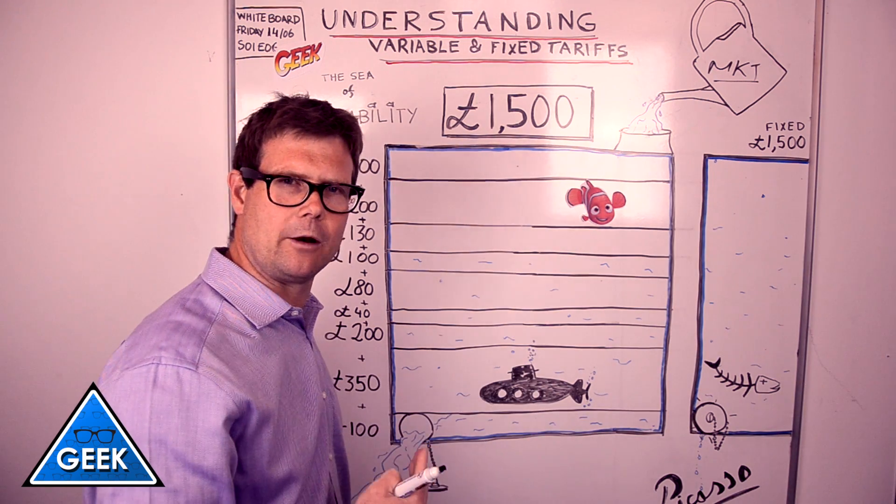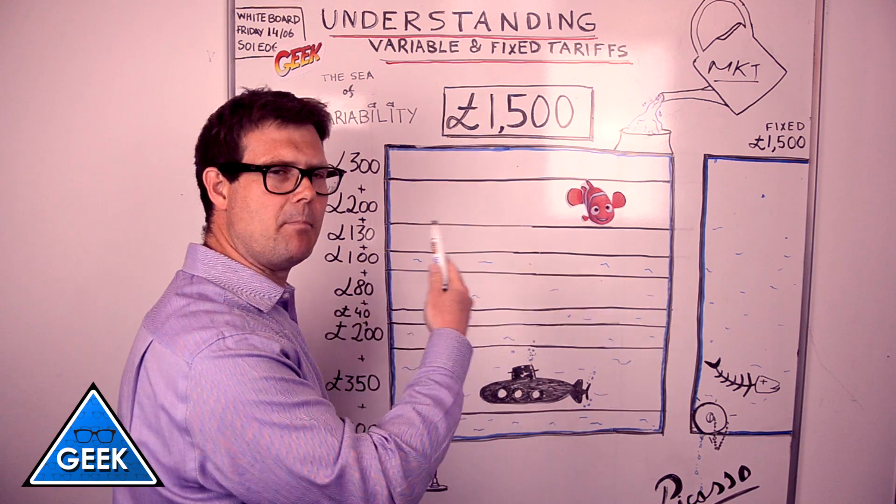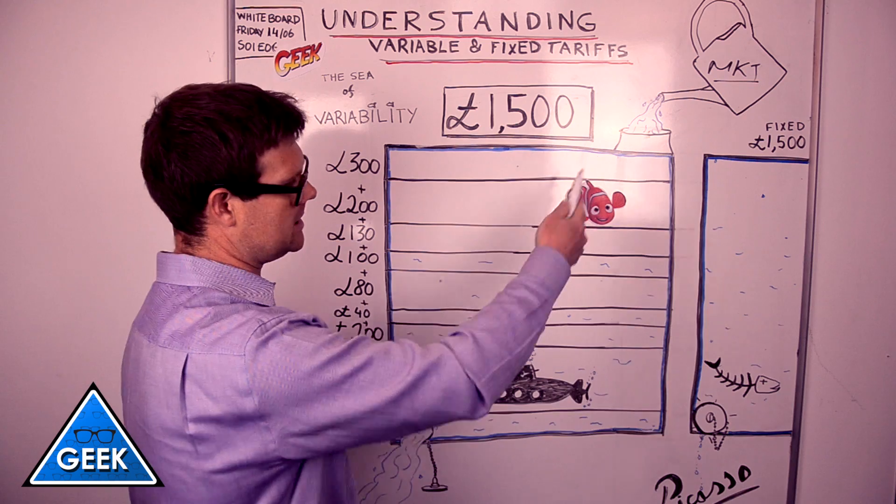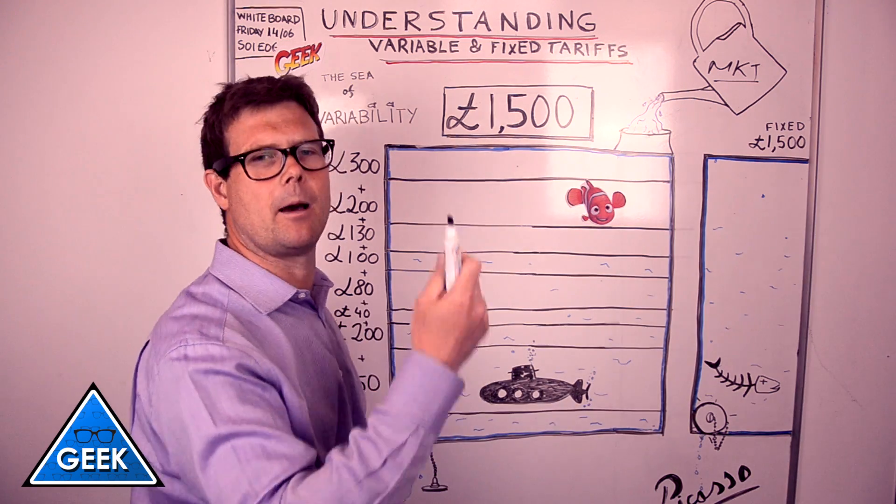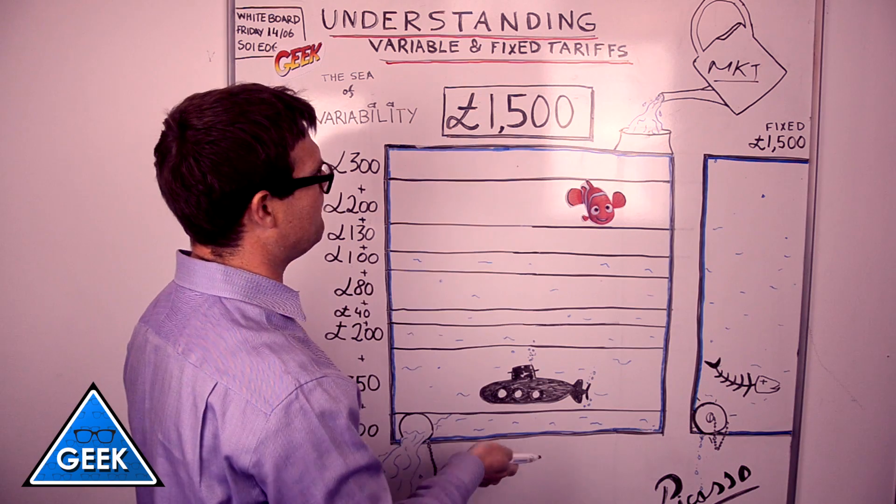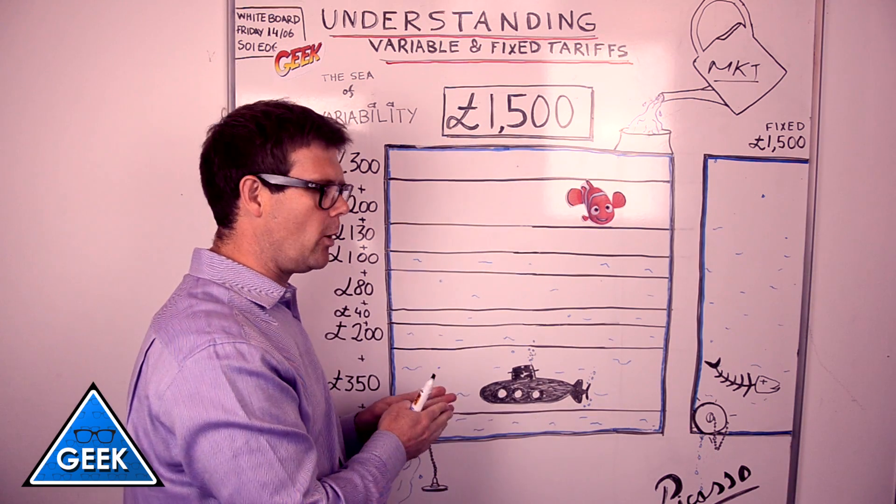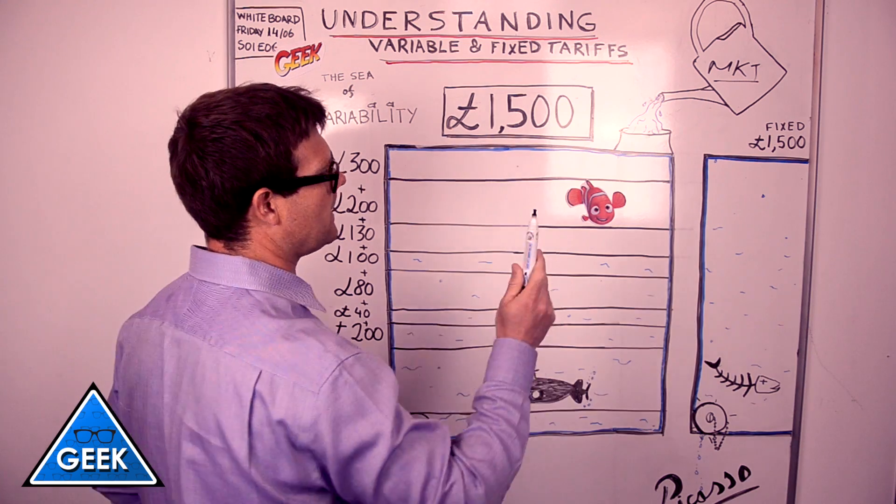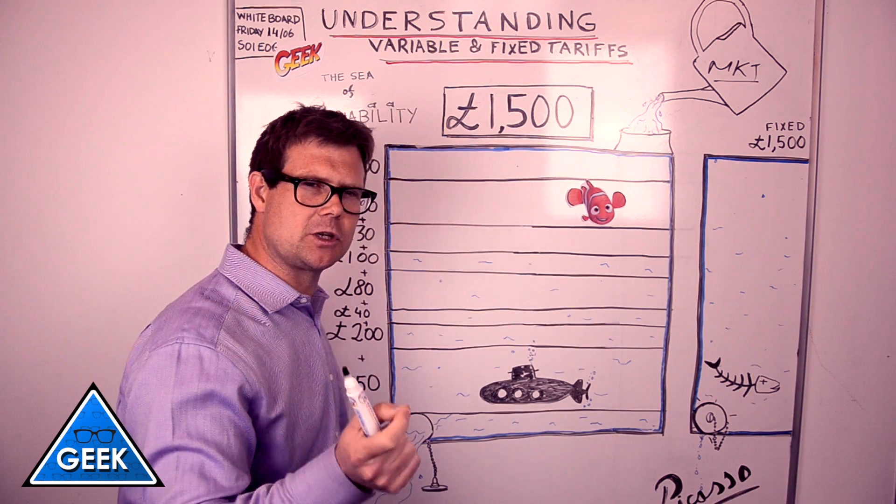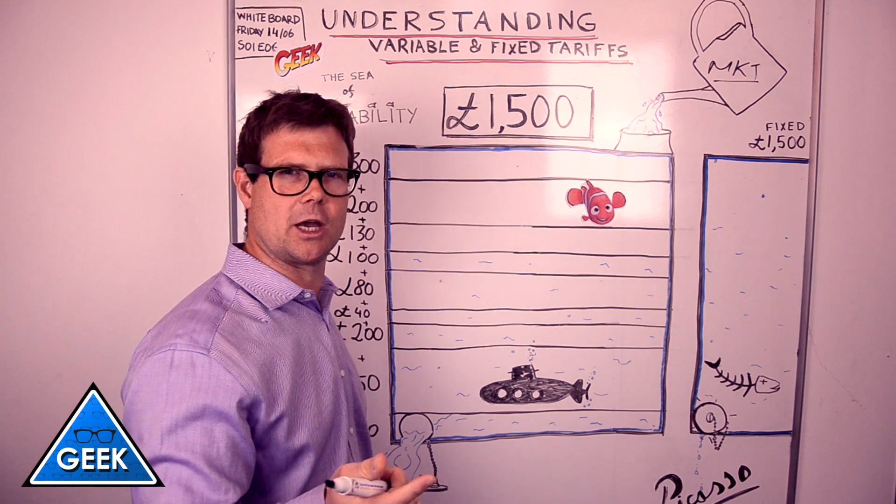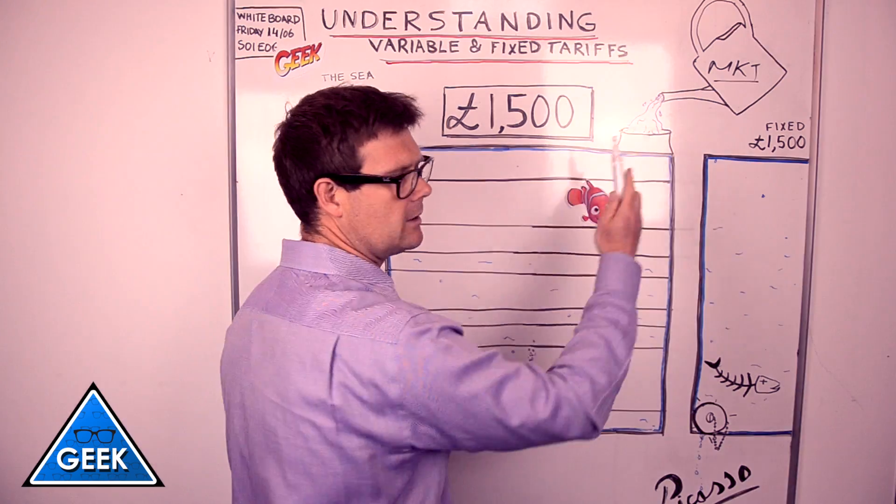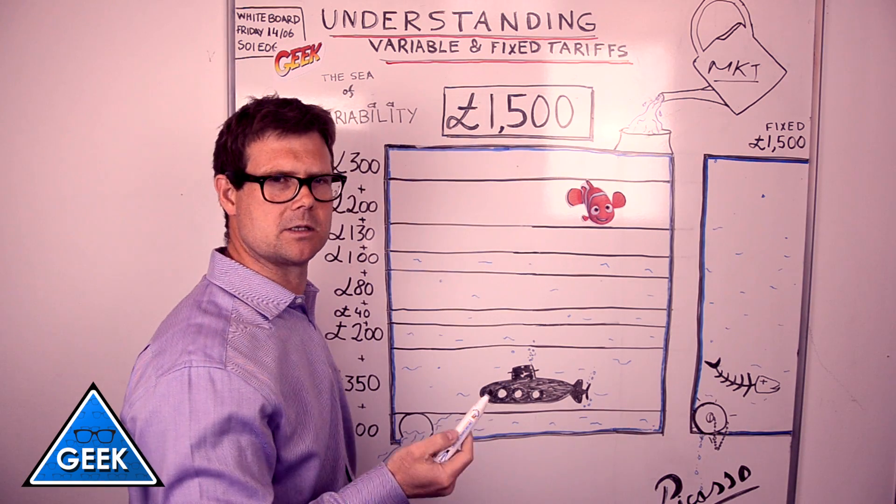But we don't have a Bank of England base rate equivalent in the energy market, so effectively this whole thing is largely a function of a supplier coming up with a number. And that probably explains why they all magically seem to change their price within about two to three weeks of each other. A fixed price deal, you have certainty at least in terms of your budget and how much you're going to spend. But obviously if the market price drops off, you're still left paying a higher price, so there are some considerations there.